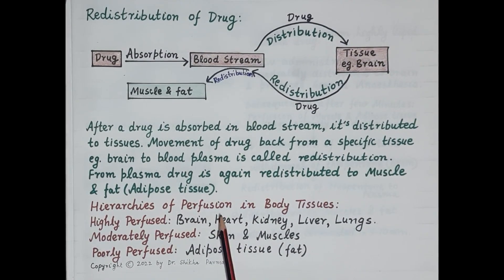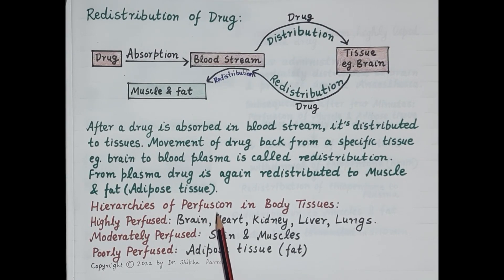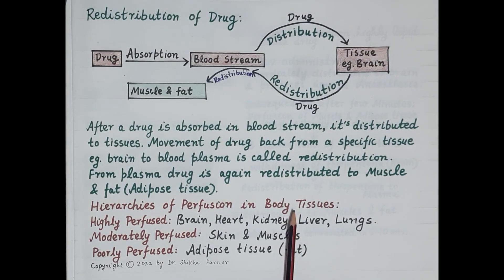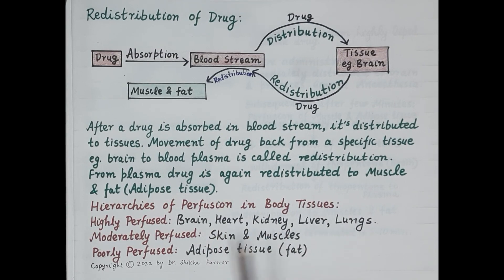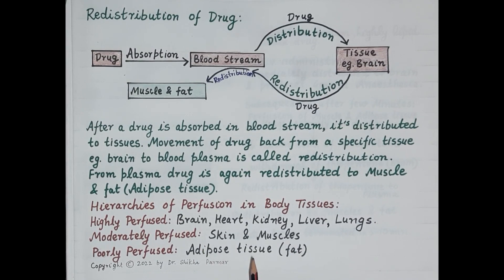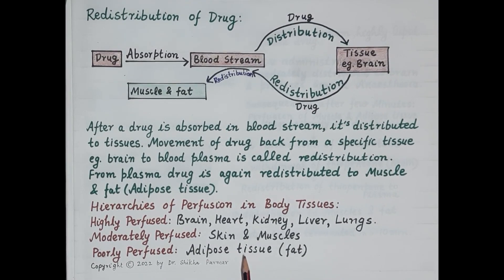To understand the phenomenon of redistribution, let's look at the hierarchy of perfusion in body tissues — that is, the order in which blood is supplied to various tissues. Organs that are highly perfused with the richest and fastest blood supply are the brain, heart, kidney, liver, and lungs. Moderately perfused organs are skin and muscles, while adipose tissue or fat tissue has the poorest and slowest supply of blood. Another very important characteristic of adipose tissue is that it has a very high affinity for lipid-soluble drugs — it strongly binds them and acts as a reservoir.